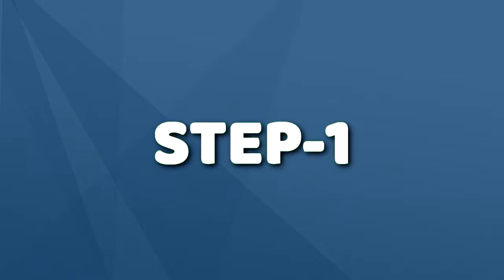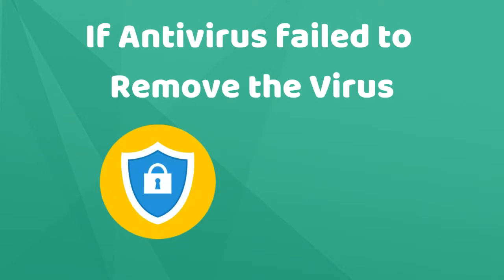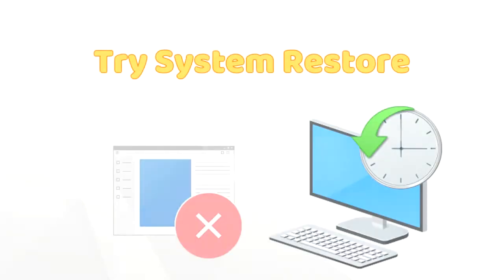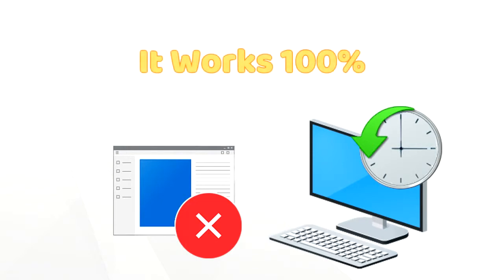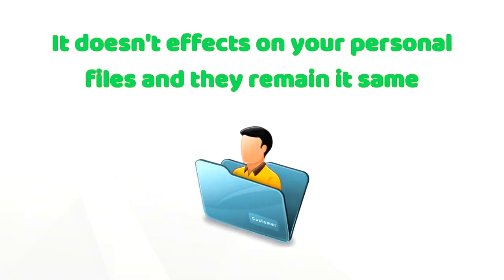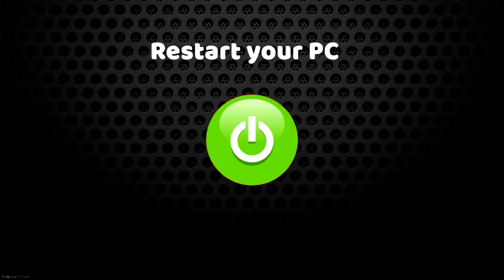Step 1: Do a system restore. If your anti-virus software is not able to remove this virus, then you can try the system restore option. This is a very powerful and effective option to recover your PC to the point when your PC configuration was healthy. It does not affect your personal files and they remain the same. So after the system restore, restart your PC again.